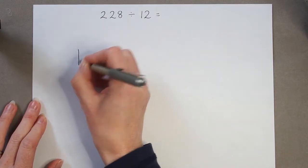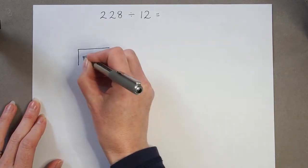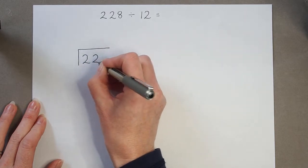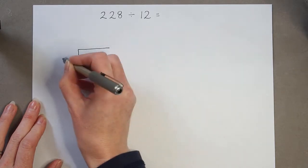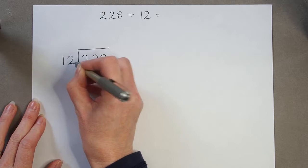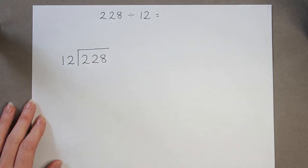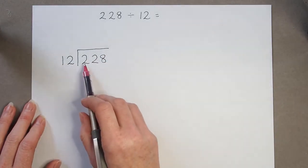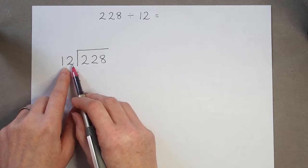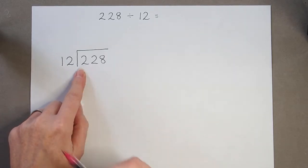So in my short division method, I have 228 divided by 12. So I start here and say how many 12s are there in 2? 2 divided by 12.